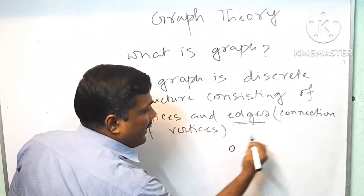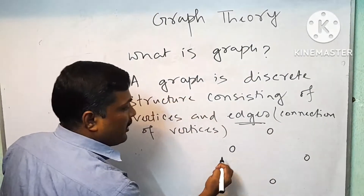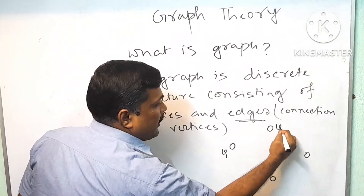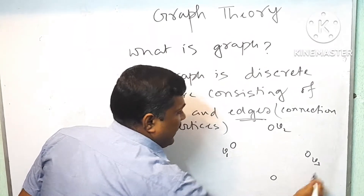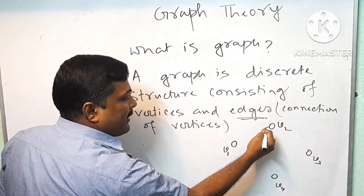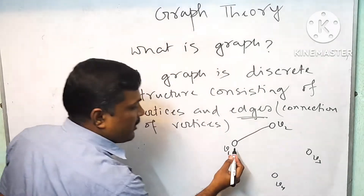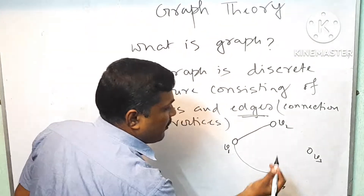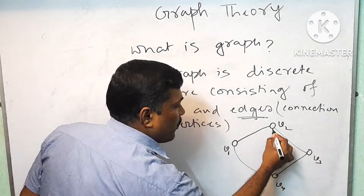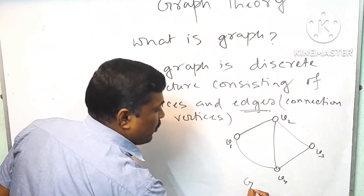Suppose this is one vertex, this is another vertex, this is another vertex, this is another vertex. Suppose this is V1, this is V2, this is V3, and it is V4. And this connection — not necessarily a straight line, you can draw just a curve also. This is one graph G.